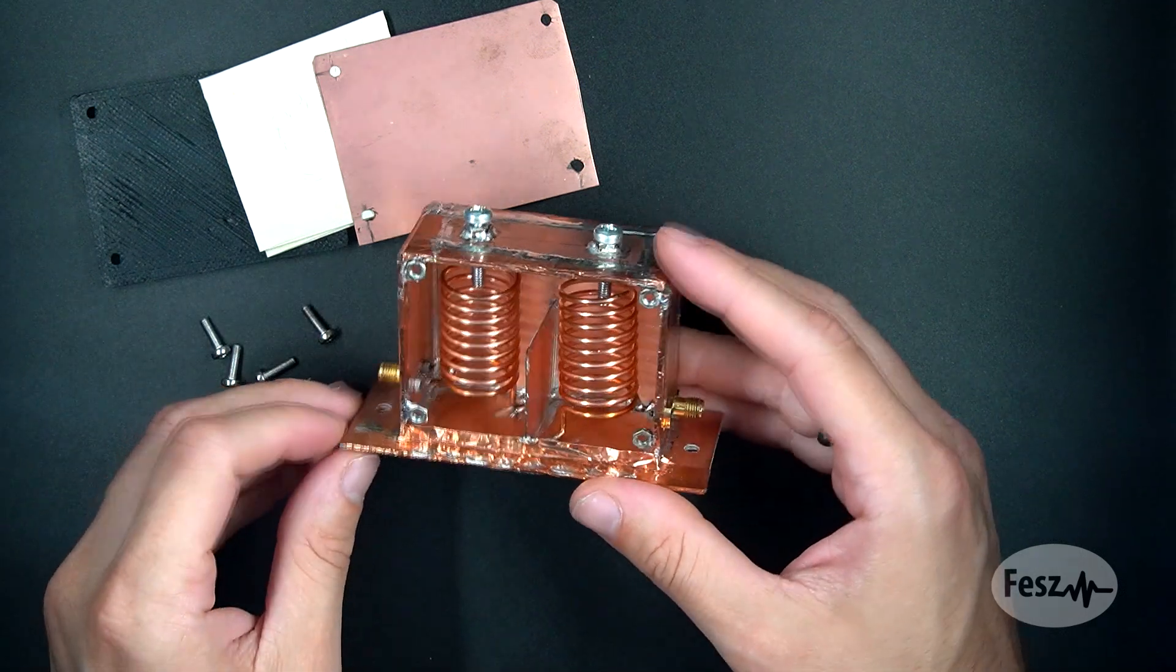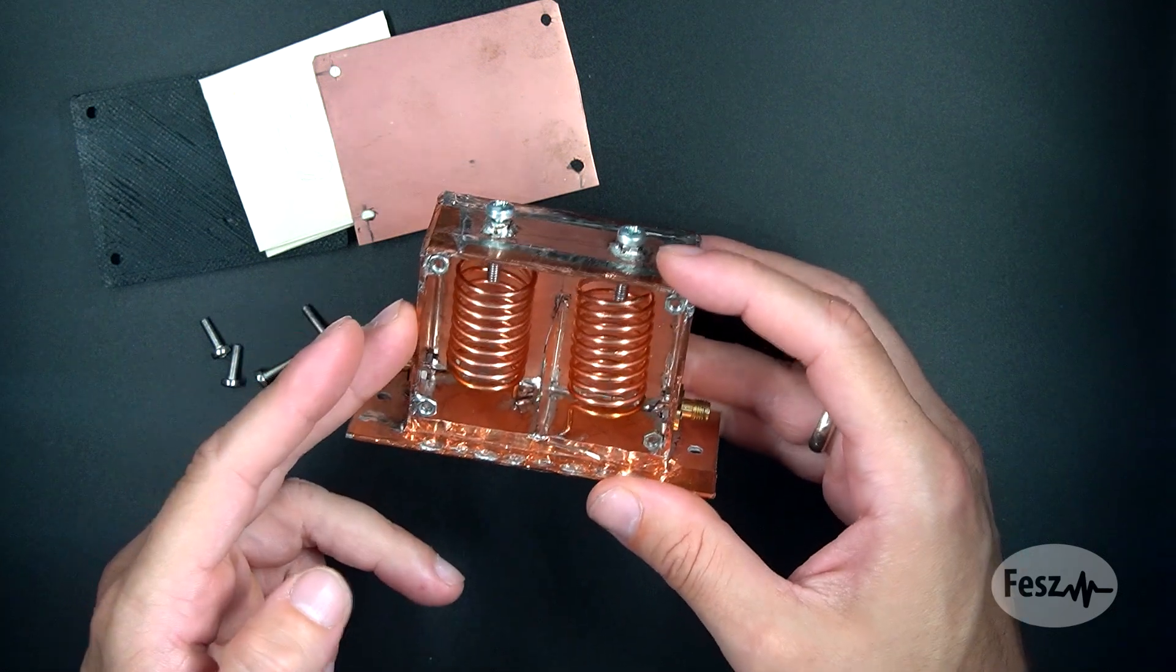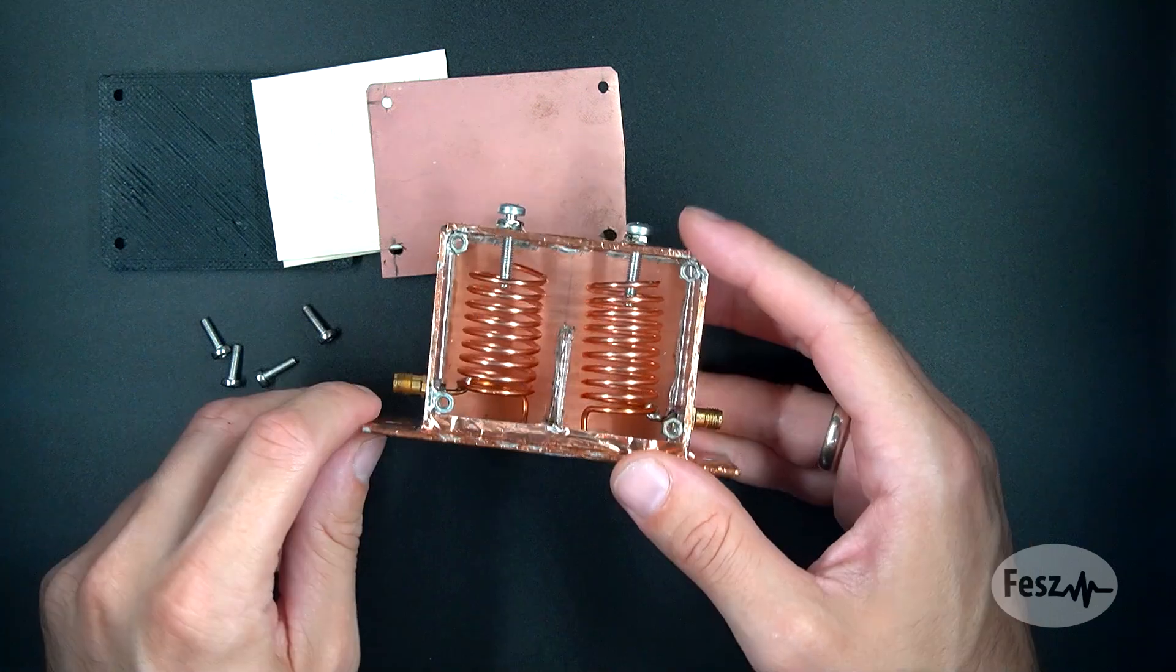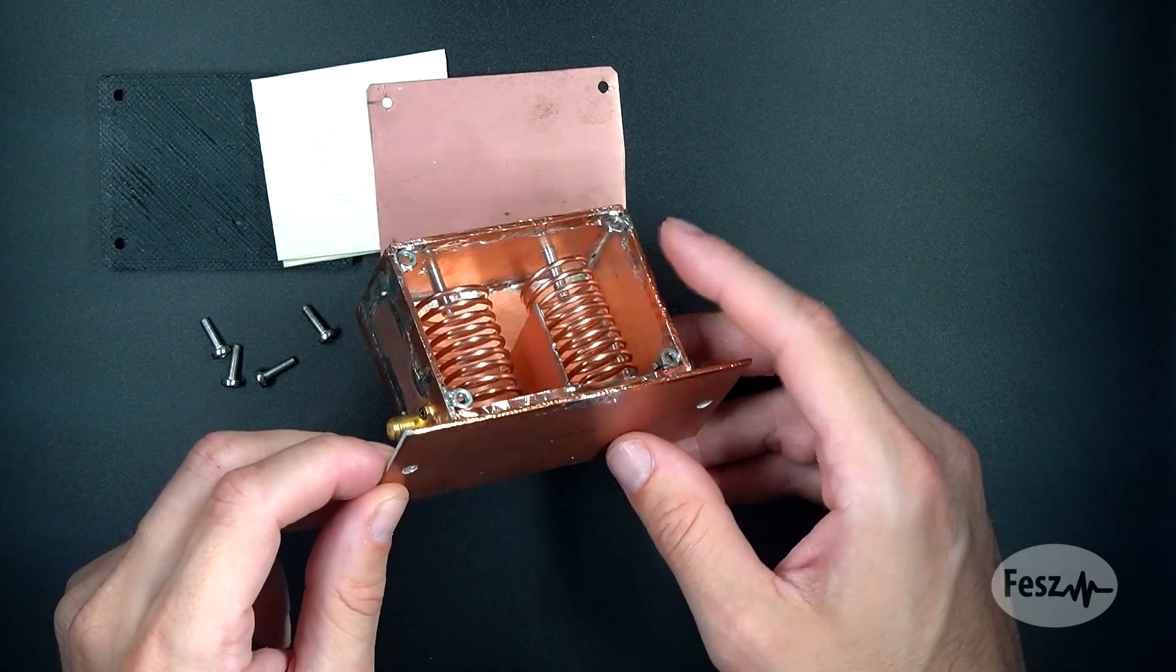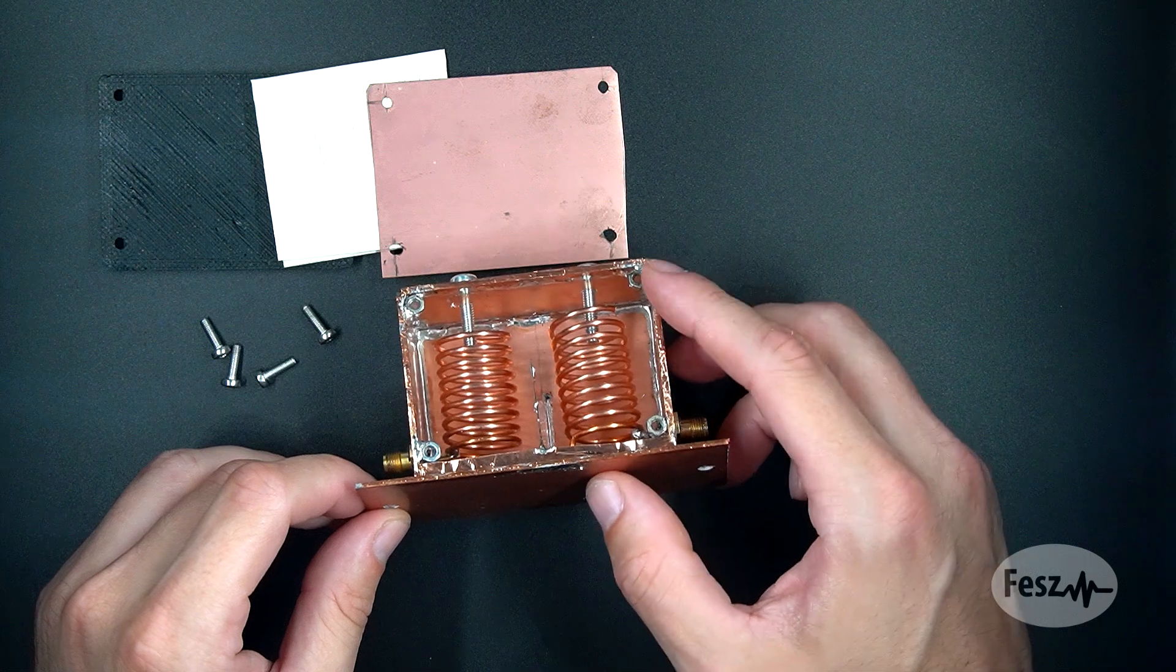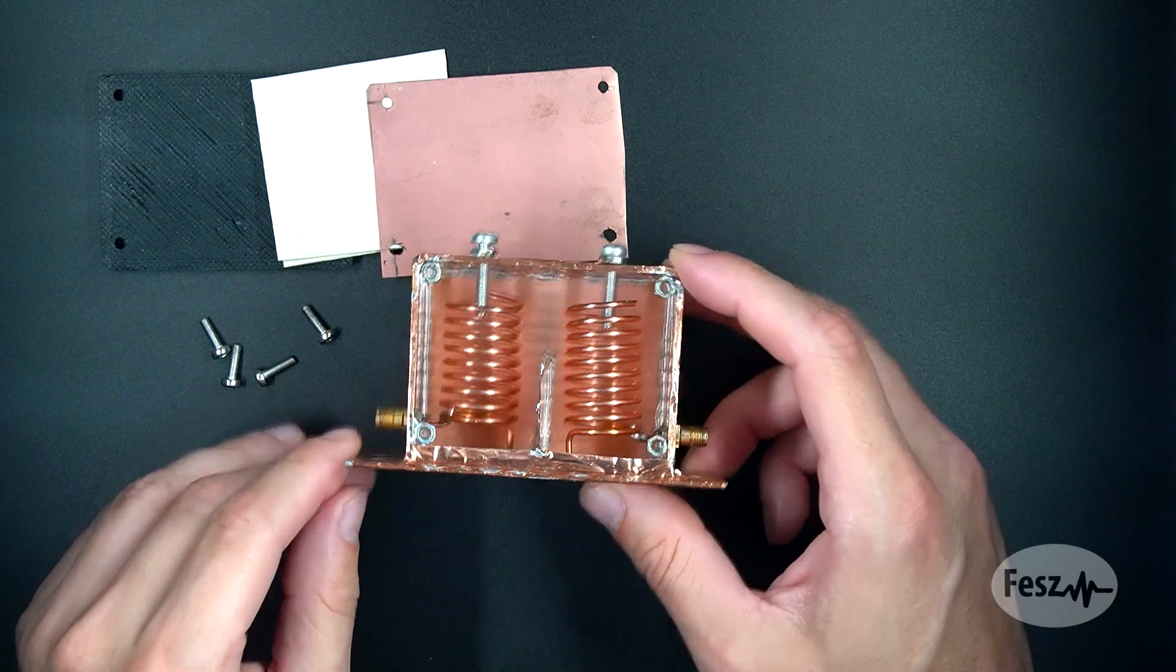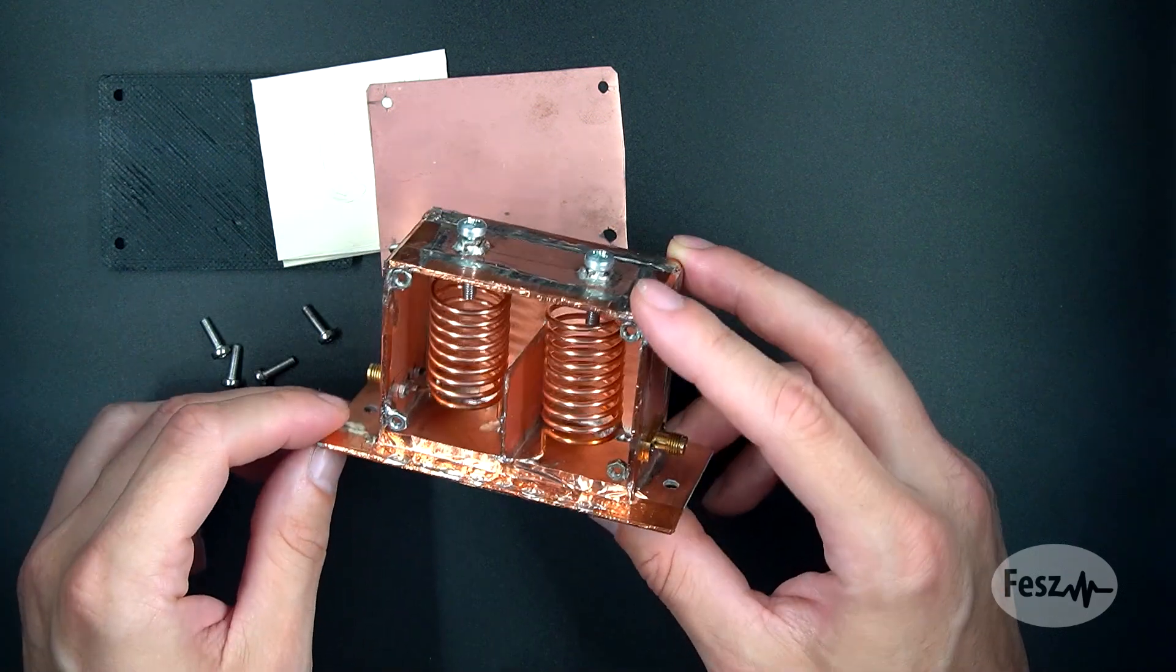From a construction point of view, this is built in the same way as the previous filters: SMA connectors, copper PCB, a lid with a piece of plastic to close it up really nicely. And the only difference is that I tried to add in these nuts on the corners to try and screw everything in. These aren't connected all that well, so maybe this isn't the best way of doing things. And of course, we also have the tuning screws on the upper side.